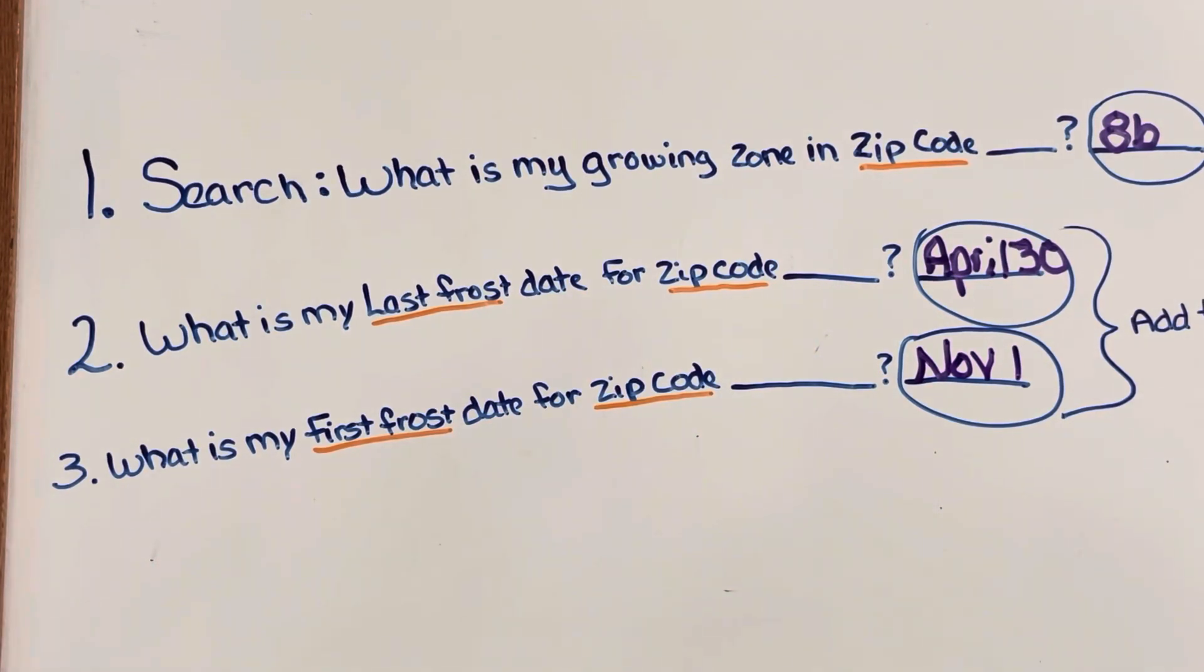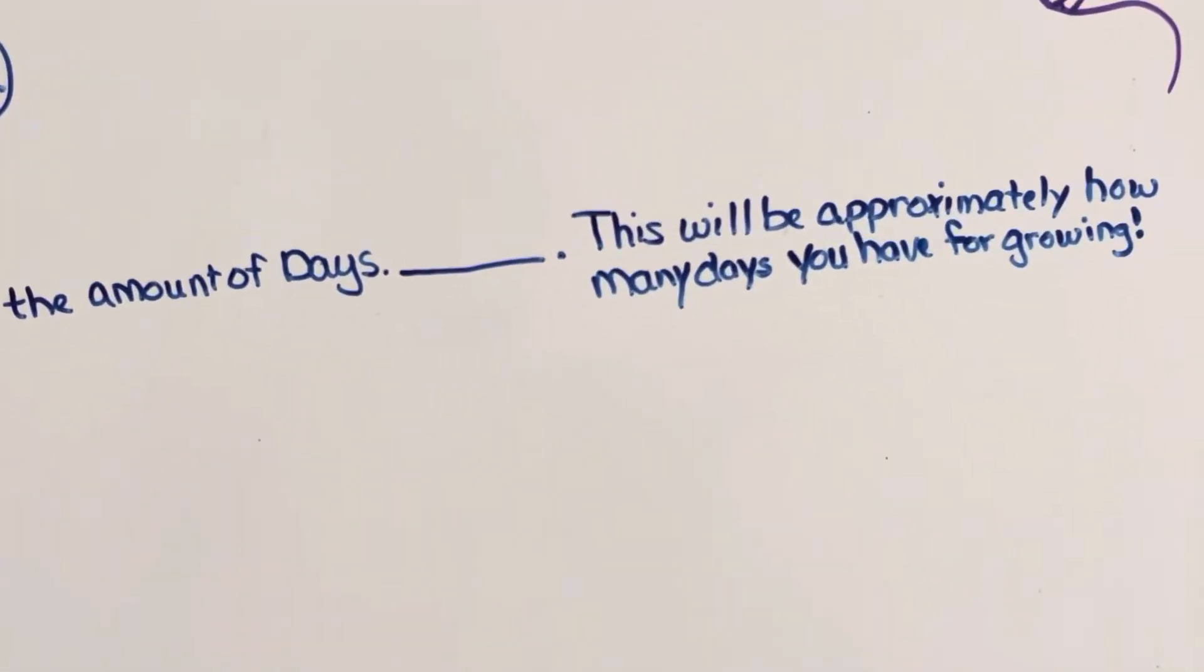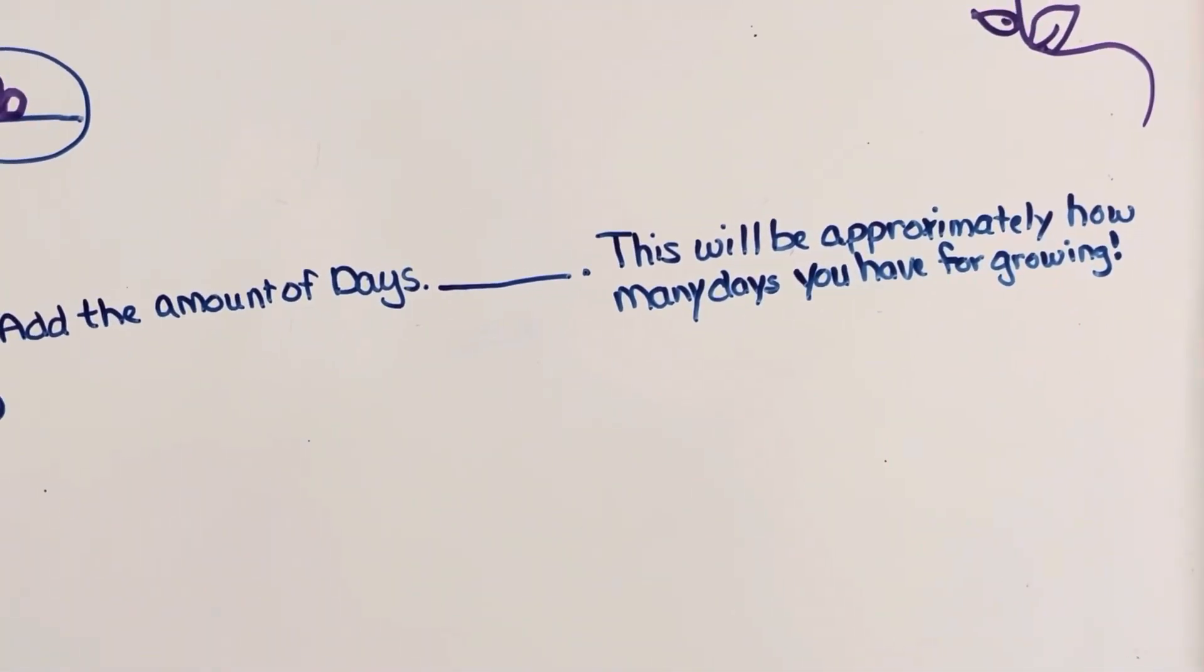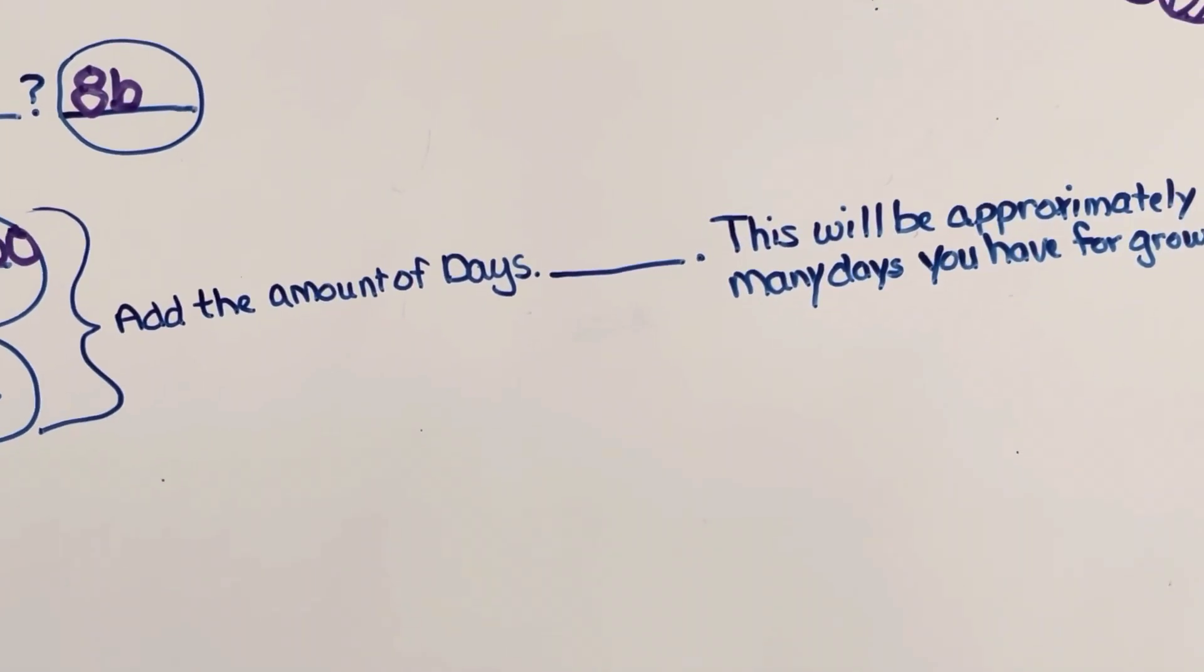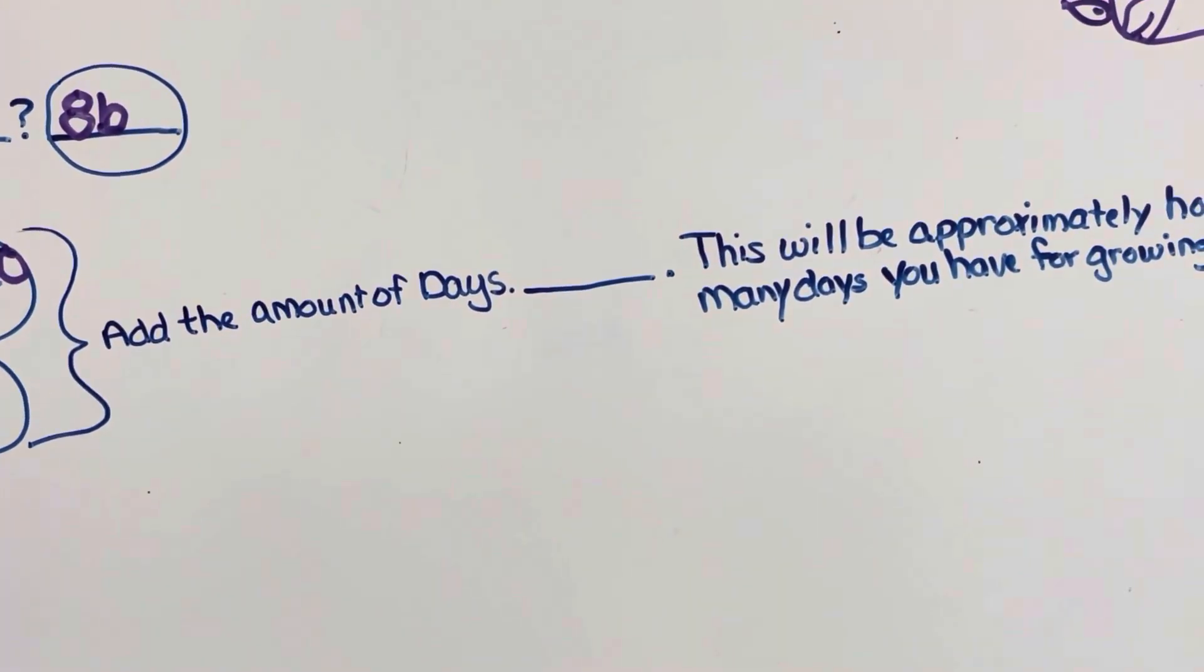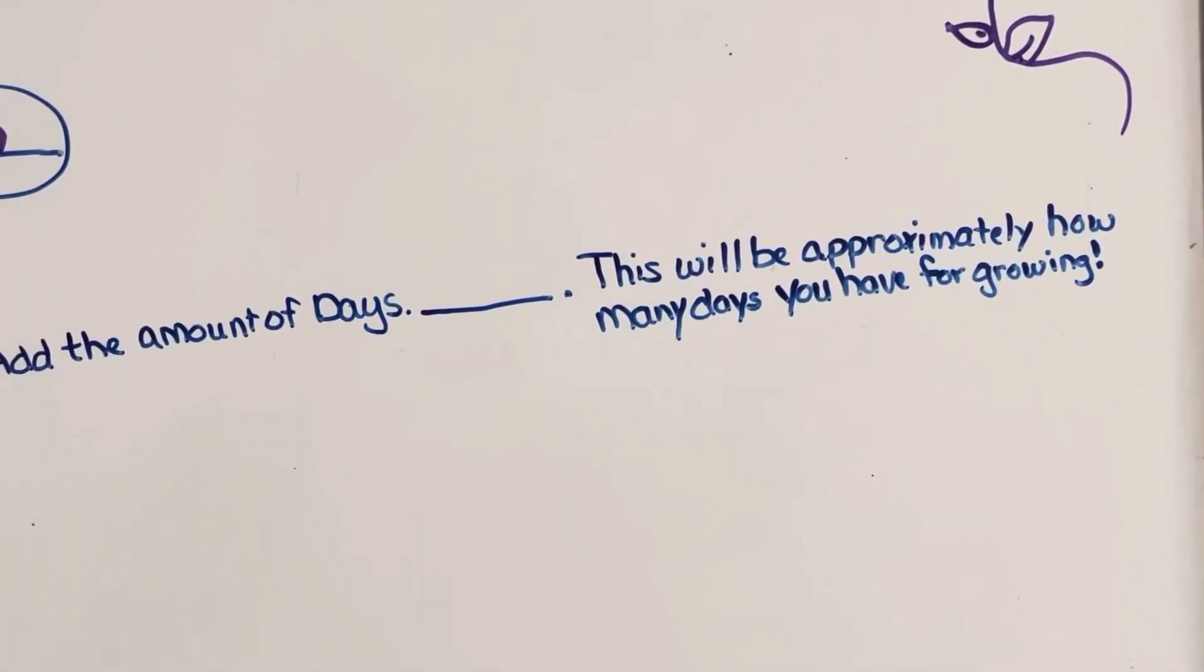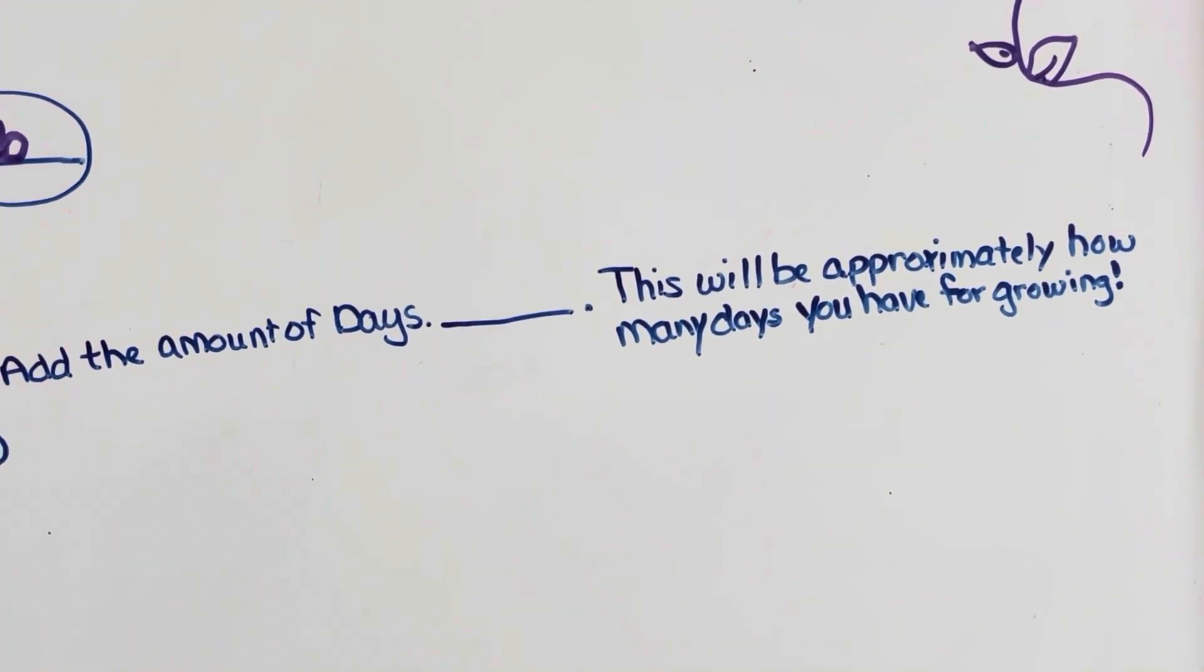So then you can go on to a calendar and figure out how many days are from your last frost date to your first frost date. Then you'll add all those total days up to see how many days you have for growing. That's important to know how many days you have to grow because when you look on a pack of seeds it'll tell you it takes this amount of time for these certain seeds or this plant to fully ripen and be ready to harvest. If you don't have enough days for that particular item you might want to look for something different.